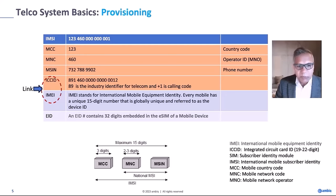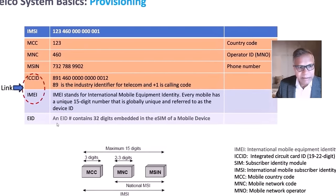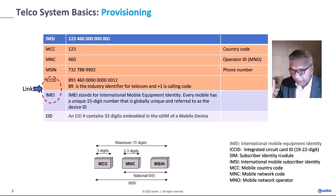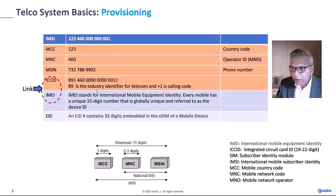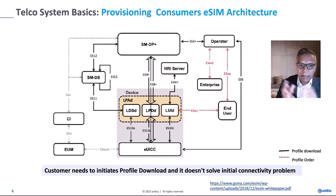When you subscribe to a service, each eSIM or iSIM device comes with a unique number called the EID or IMEI. The network provisions the device by pairing or linking the IMEI with a unique number called the ICCID — Integrated Circuit Card Identifier — which is 19 to 32 digits. Once provisioned, the device is given a unique 15-digit number representing a mobile country code (3 digits), an operator code (2–3 digits), and a 10-digit phone number.